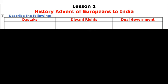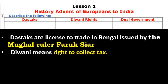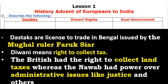First of all, what are Dastaks? Dastaks are licenses to trade in Bengal, and they were issued by the Mughal ruler Farrukhsiyar. Next, Diwani rights — the right to collect tax. The British got this right after the Battle of Buxar. Diwani rights means the right to collect tax, and the British East India Company had this right from Shah Alam II.